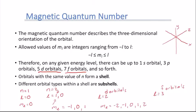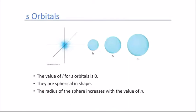Now let's look at the shapes of these orbitals, starting with s orbitals — the simplest. S orbitals have L=0 and, when the wave function is solved, they are spherical. N=1 gives us 1s, N=2 gives us 2s, and N=3 gives us 3s. The only difference between energy levels is the size of the sphere — the larger N, the larger the sphere.